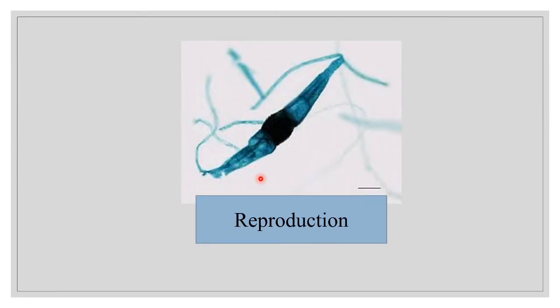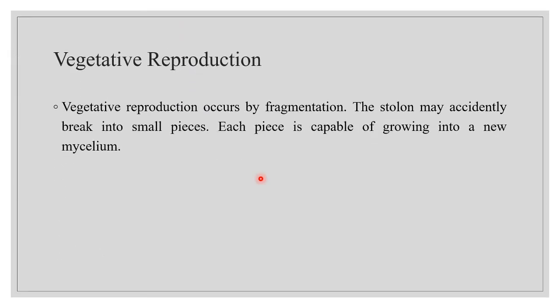There are three different types of reproduction in Rhizopus: vegetative reproduction, asexual reproduction, and sexual reproduction. Vegetative reproduction occurs by fragmentation; the stolon may accidentally break into small pieces, and each piece is capable of growing into a new mycelium.